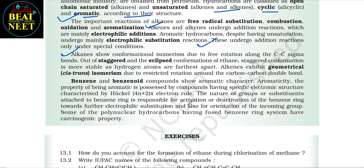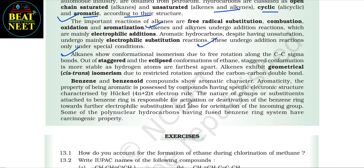Alkanes show conformational isomerism due to free rotation along C–C sigma bonds; the staggered conformation of ethane is more stable than eclipsed as hydrogen atoms are farthest apart. Alkenes exhibit geometrical cis-trans isomerism due to restricted rotation around the C=C double bond. Benzene and benzenoid compounds show aromaticity: the property of being aromatic is possessed by compounds having a specific electronic structure characterized by Hückel's (4n + 2) pi electron rule. The nature of substituents attached to the benzene ring governs activation or deactivation toward further electrophilic substitution and the orientation of the incoming group. Some polynuclear hydrocarbons with fused benzene ring systems have carcinogenic properties.